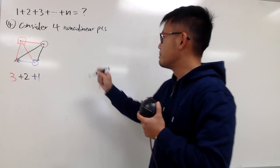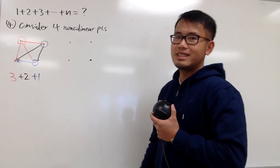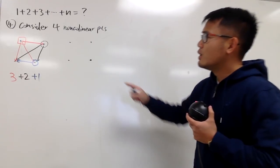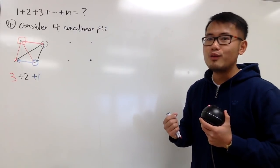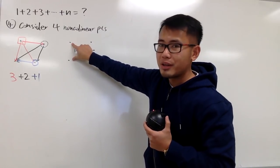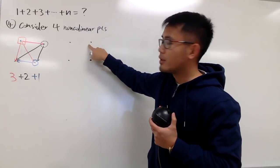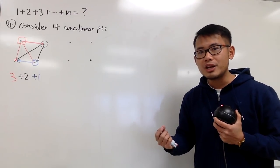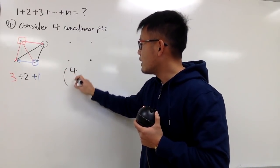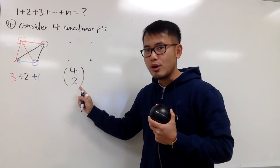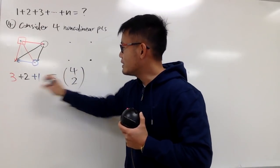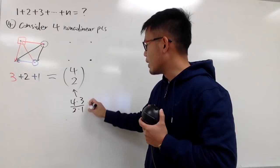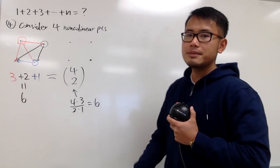This is where the combinatoric part comes in. So once again, let's do one, two, three, four — four non-collinear points. Remember that when you have two points, you can draw a segment between them. When we have four points like this, how many ways are there for us to select two points? You can pick this two, draw a segment, pick another two, and so on — connecting the dots. When we're talking about selection, the order doesn't matter. So this is exactly four choose two. Four points, choose two of them, and you connect the dots. So four choose two is equal to four times three divided by two times one, which is also six — just like our count of six.